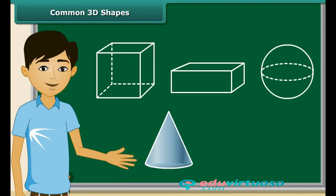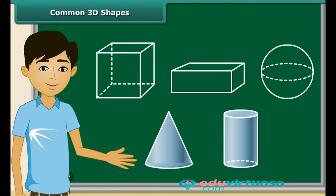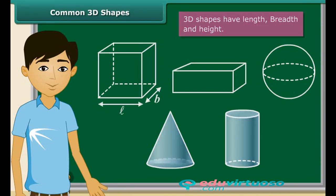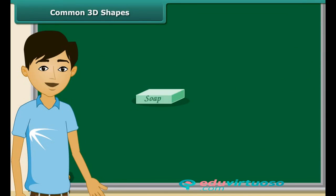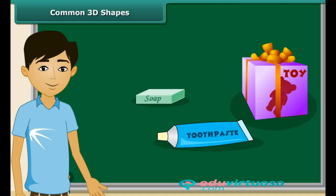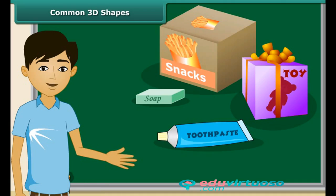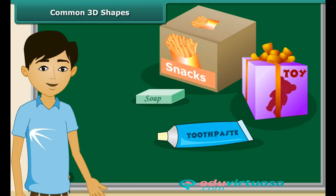Can you recall these shapes? Yes, these are 3D because they have length, breadth and height. Soaps, toys, paste, snacks etc. often come in the packing of cuboidal, cubical or cylindrical boxes. Let us learn about their surface area and their volume.